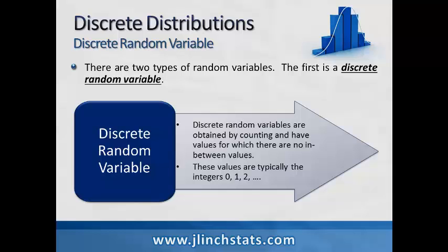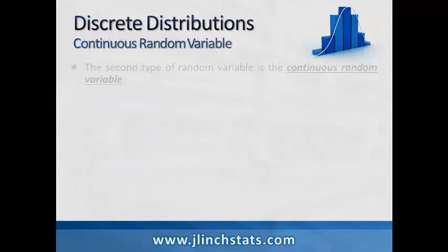Typically these are the counting numbers, or whole numbers: 0, 1, 2, and so forth. Now we can have infinitely many possible outcomes in a discrete distribution; however, the values that it takes on are counting numbers, or integers, or whole numbers.